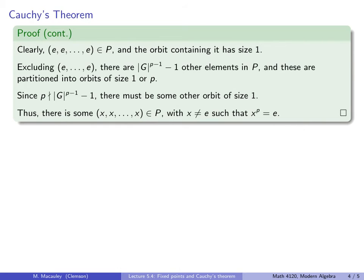Remember, Cauchy's theorem says that if p is a prime number dividing the order of G, then our group G has an element of order p, and there is our element.